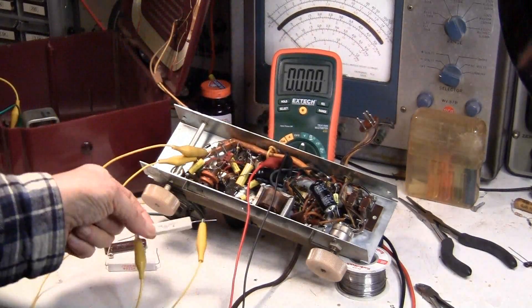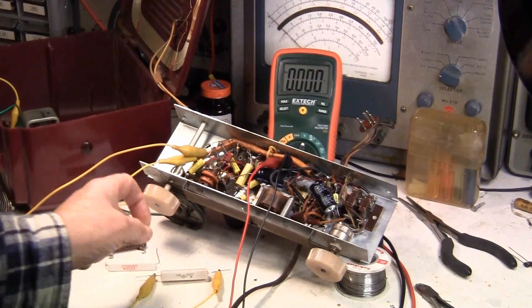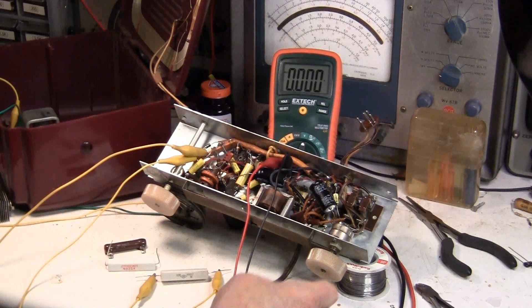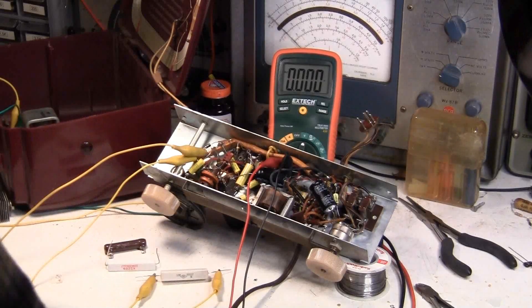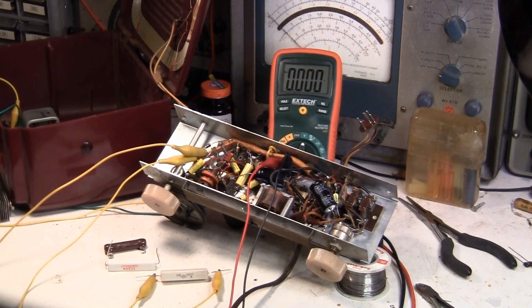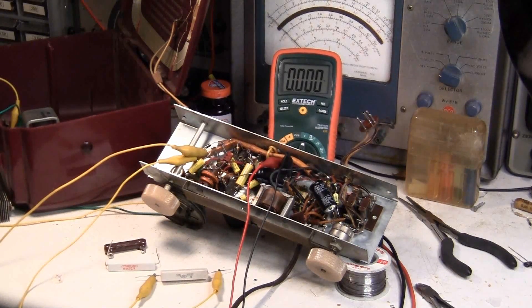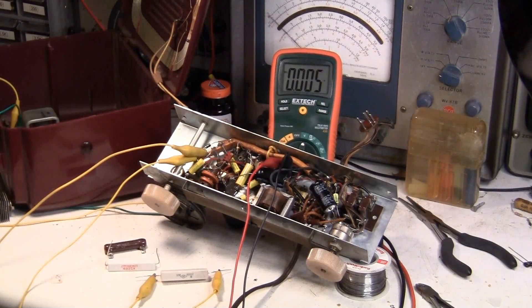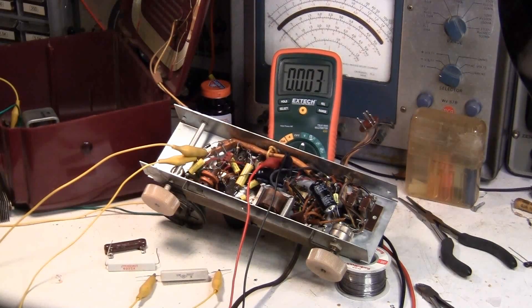I've got the 300 ohm resistor right here. The radio's on and the speaker's hooked up. I'm going to turn on the variac and bring it up slowly. Okay, here we go.